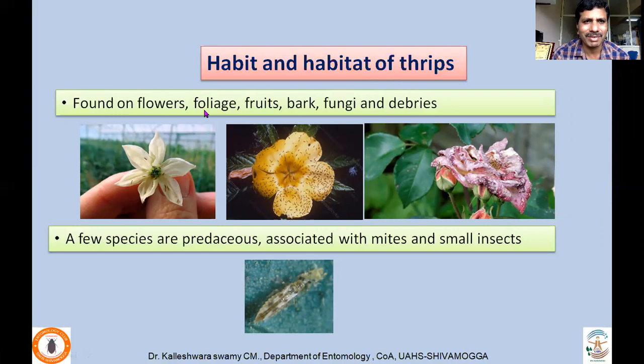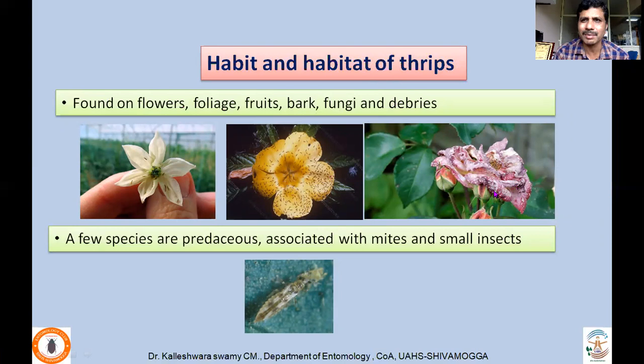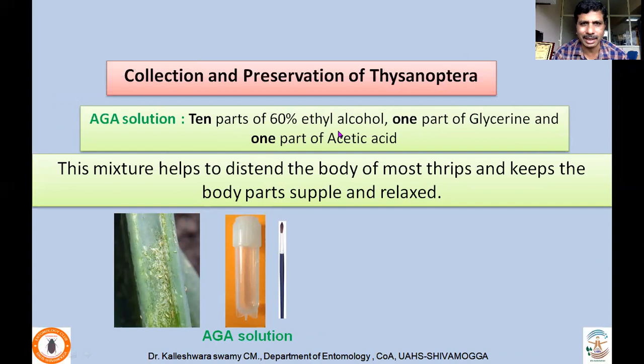Regarding habit and habitat: thrips are usually found on flowers, foliage, fruits, bark, fungi, and debris. Large numbers of thrips are found on flowers — on roses, for example, their feeding activity leads to deformation, making them less suitable for marketing. A few species are predaceous, associated with mites as well as small insects, acting as predators.